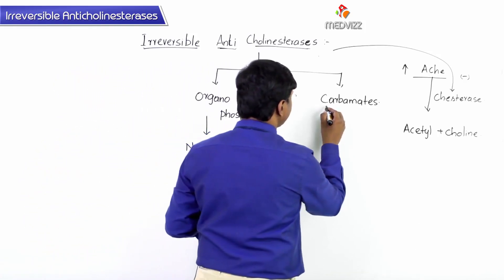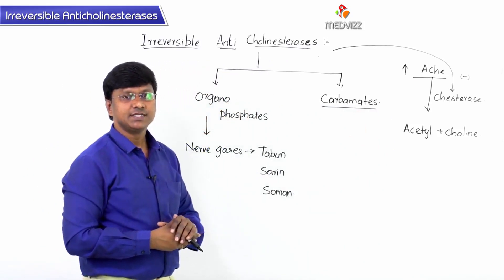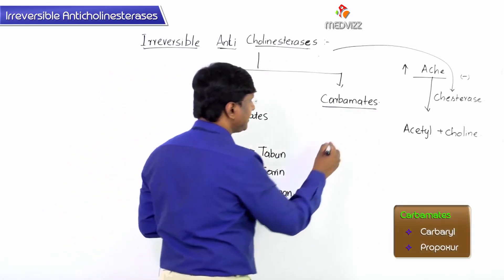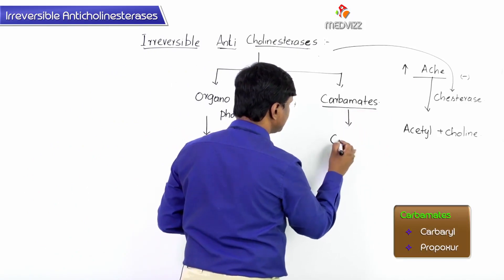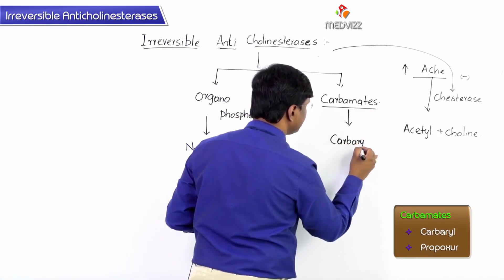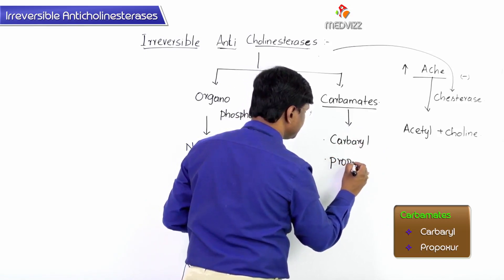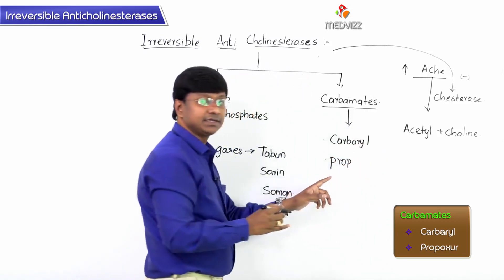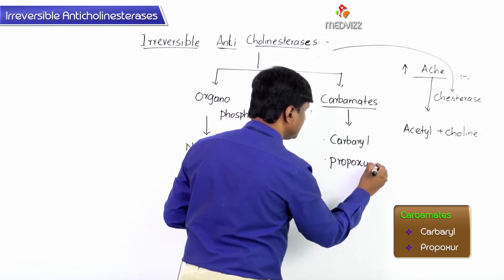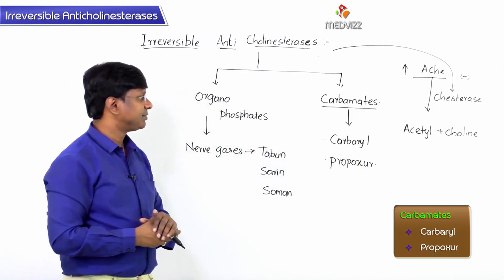The carbamate group includes carbaryl and propoxor — these two drugs fall under the organocarbamates.